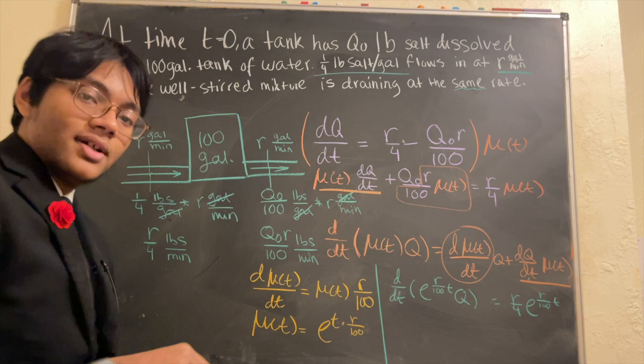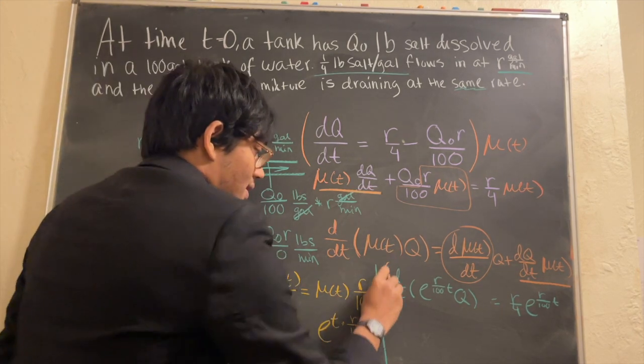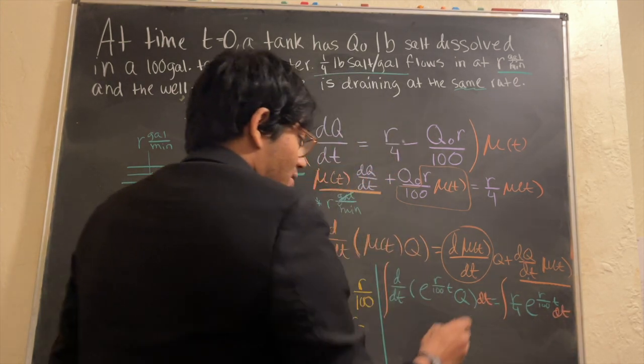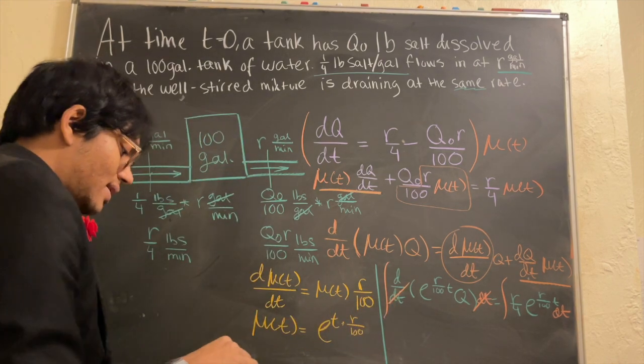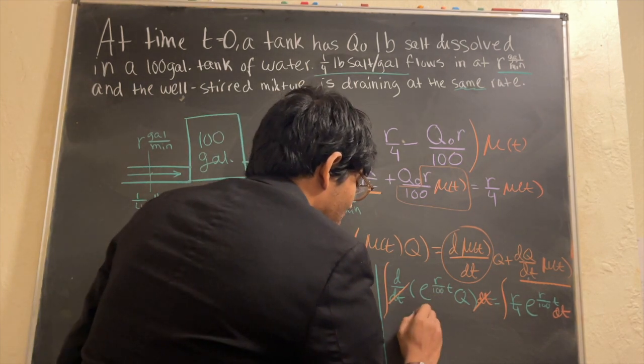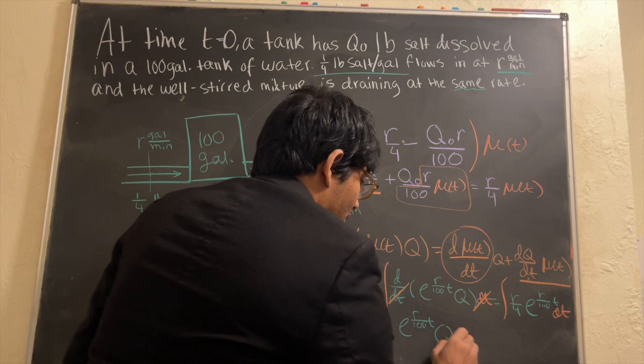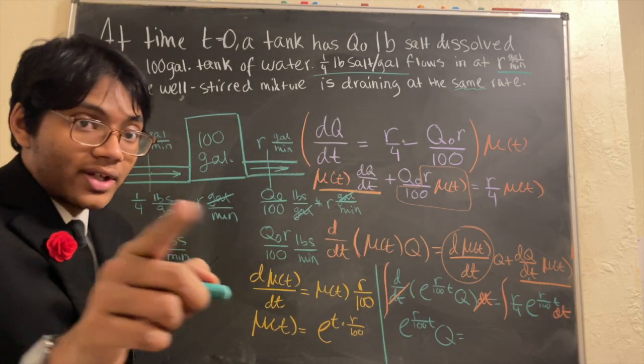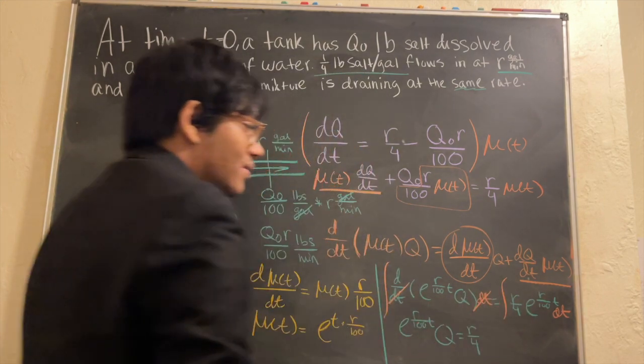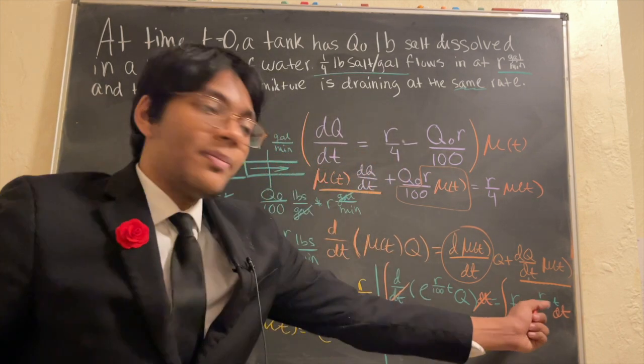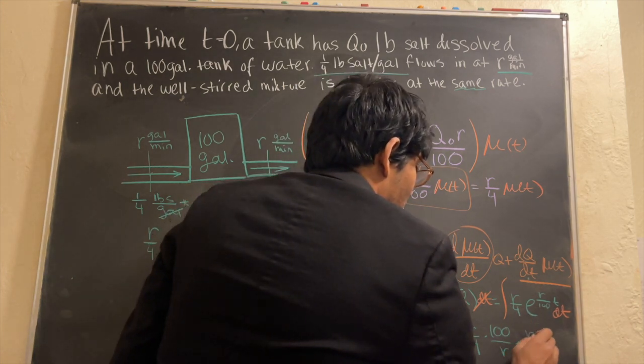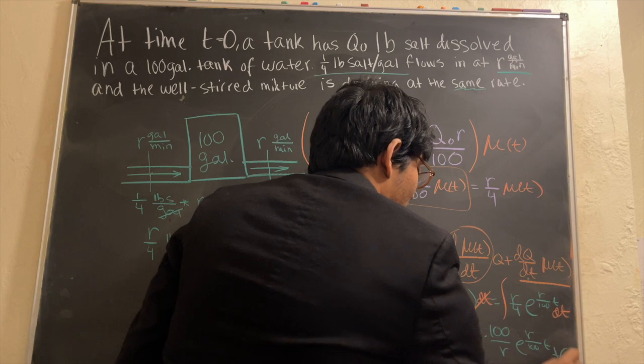All right. So now comes the magic. Integrate both sides with respect to t. And so this and this cancels out. The integral of this differential is going to spit back out what we have inside here. And on the right-hand side, don't forget your plus c, folks. Right-hand side, we can take out this constant r over 4. And we integrate this. That's going to give us flip that exponent and put in e to the r over 100 t. And don't forget the plus c.